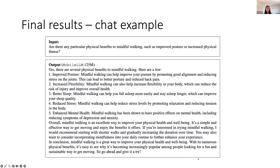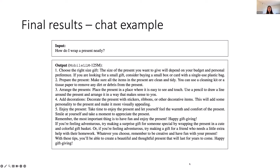We present examples of chat output generated by the mobile LLM 125M model in response to user questions. Mobile LLM is capable of generating coherent and relevant responses — for example, when asked about the benefits of mindful working, it answers with improved posture, increased flexibility, better sleep, and similar points. Despite its small size, the mobile LLM 150M model is also able to effectively understand questions and generate reasonably well responses, highlighting the significant potential of small LLMs for on-device applications.